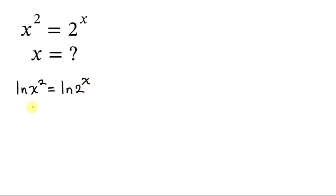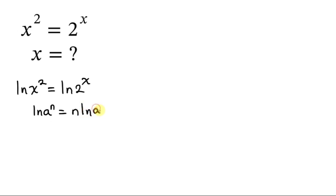Our next step will be to apply the law of logarithm to both sides. The law of logarithm says when I have ln(a^n), this is equal to — you take the exponent which is n and multiply by ln(a).